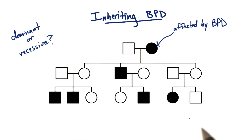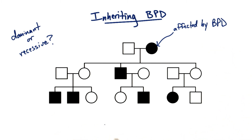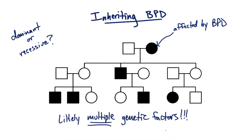These little deviations from our normal inheritance patterns are a key indicator that there are likely multiple genetic factors, as well as environmental factors, controlling the phenotype. Whenever we find incompletely penetrant traits or alleles, this is likely what's going on.